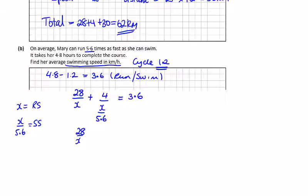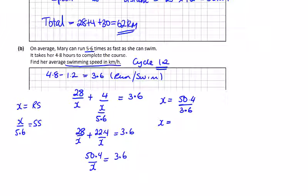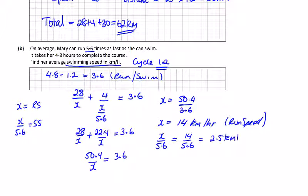Tidying this up: 28 over X plus 5.6 goes on top. 4 times 5.6 is 22.4 over X equals 3.6. Same denominator, so we can add them: 50.4 over X equals 3.6. So X equals 50.4 divided by 3.6, which works out to be 14 kilometers per hour - that's the run speed. So swim: X over 5.6, which is 14 over 5.6. She is swimming at 2.5 kilometers per hour.